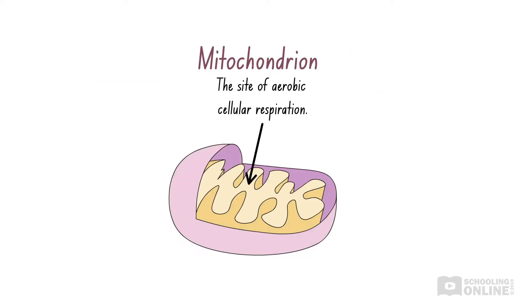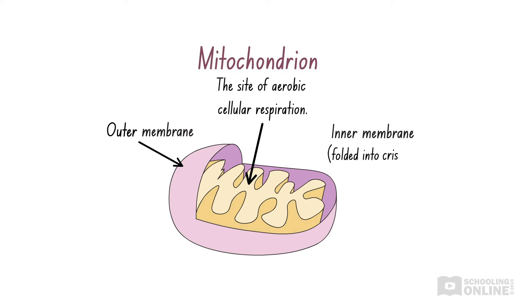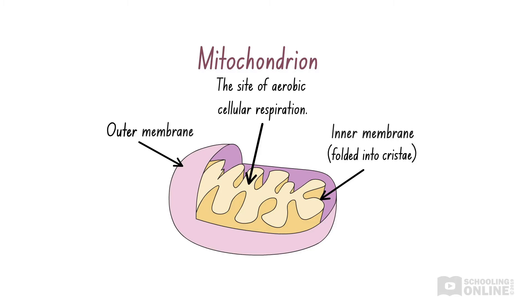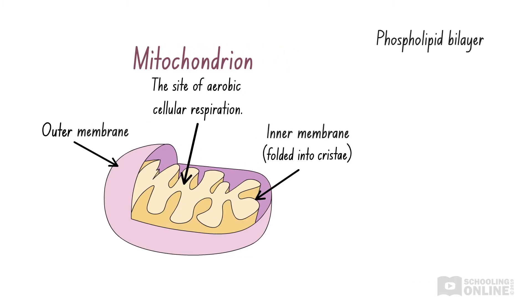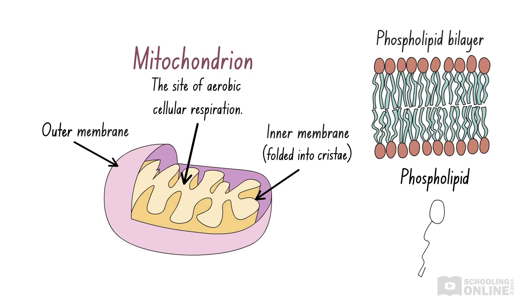Two membranes surround each mitochondrion — an outer and an inner membrane. The inner membrane is folded into cristae, which are small ridges. Both membranes are composed of a phospholipid bilayer, which consists of two layers of phospholipid molecules. There are other components inside mitochondria, but we'll discuss them in our upcoming videos on aerobic respiration in the topic cell function.